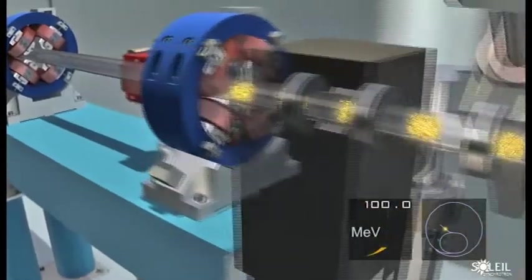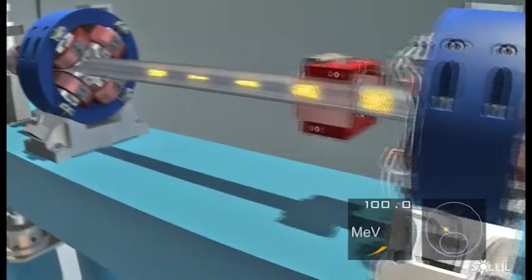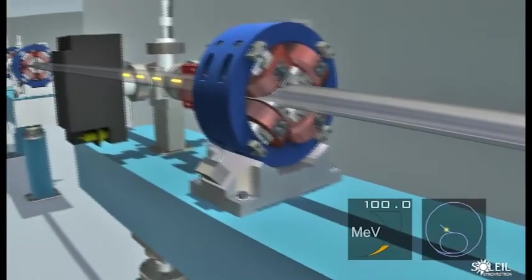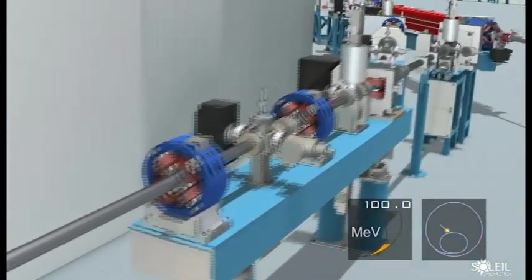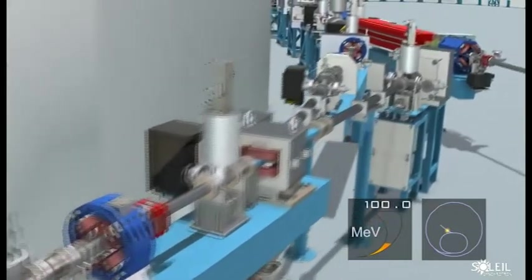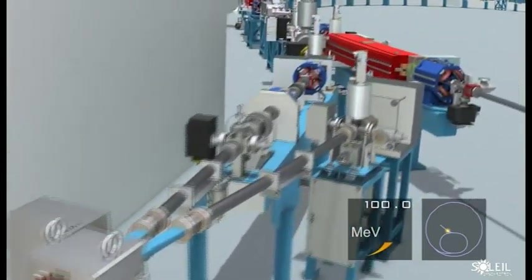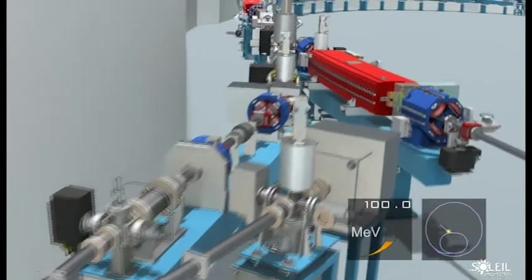Then, a further acceleration before reaching a quadrupole. This electromagnet with 4 poles keeps the electrons on the correct axis in the same way as a magnifying glass focuses light rays onto its focal point. The machine contains at least 50 quadrupoles.